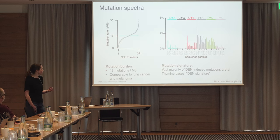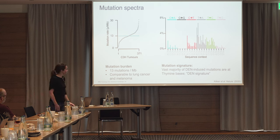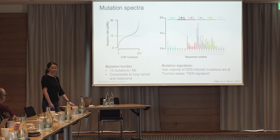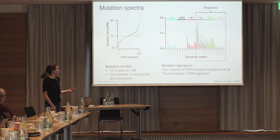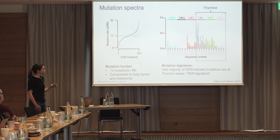The mutation rate is comparable to what you see in human cancer datasets driven by exogenous mutagens — melanoma and lung cancer typically have in the region of this many mutations. This is the mutational signature we get using the standard cosmic signatures approach. The vast majority of these mutations are thymine-to-something mutations — lots of T-to-A — so almost all the thymine mutations are sitting there. The vast majority of DEN mutations are at thymine bases.